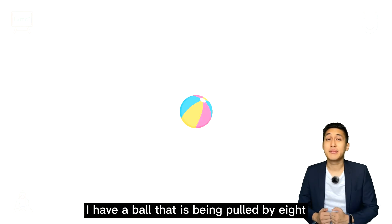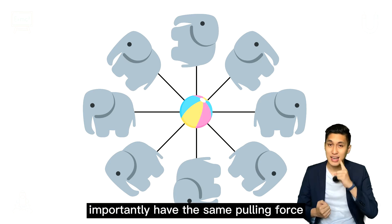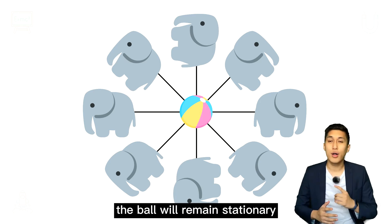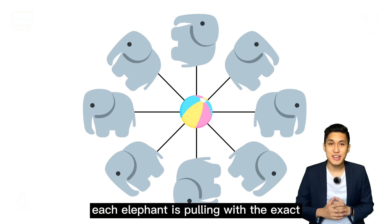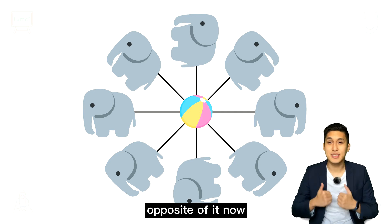I have a ball that is being pulled by 8 identical elephants. Each elephant is exactly the same size and most importantly, have the same pulling force. If all elephants pull together, the ball will remain stationary. That is because each elephant is pulling with the exact same force as the elephant opposite of it.